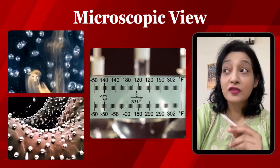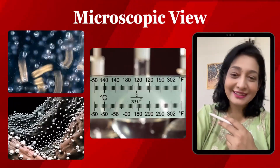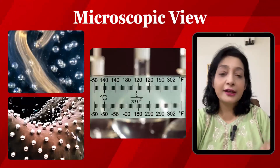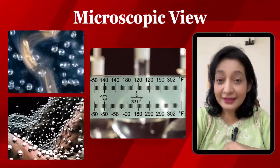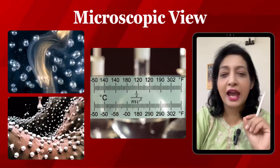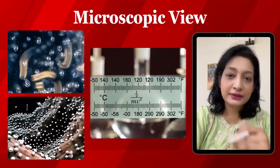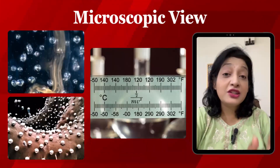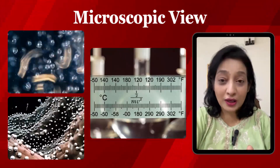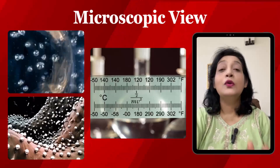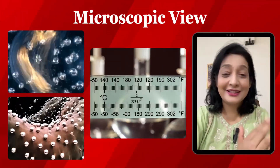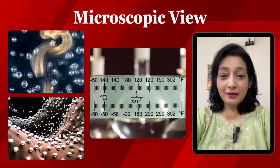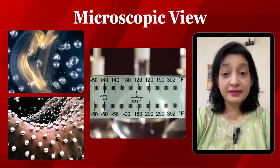In the microscopic view shown on screen: in a gas, molecules zip around randomly; in a solid, atoms vibrate in place. Temperature scales with the average of ½mv² kinetic energy per particle. Imagine a room full of kids on sugar — temperature is equal to how hyper they are on average.